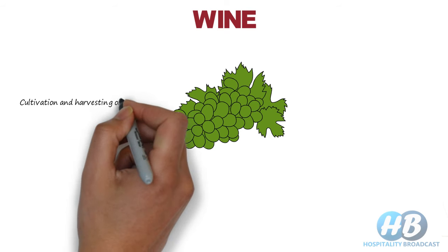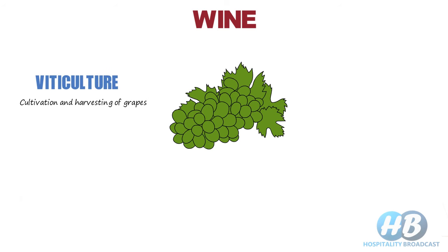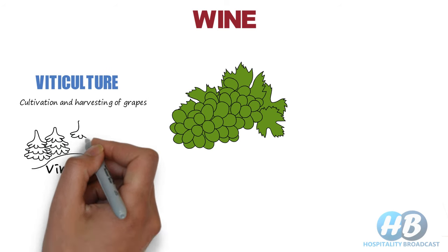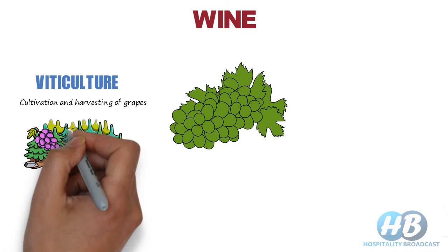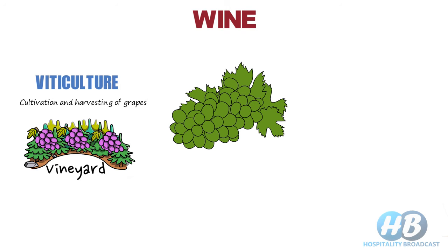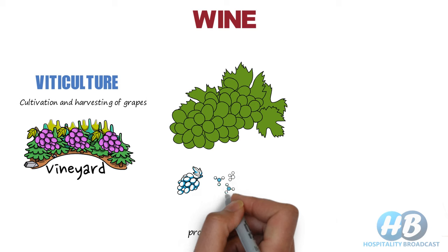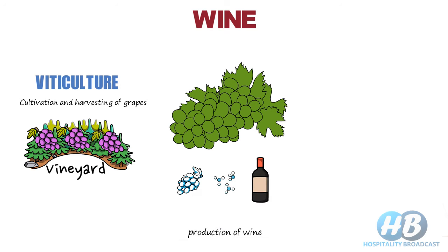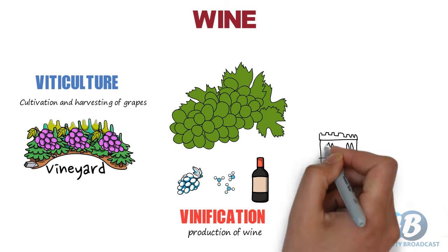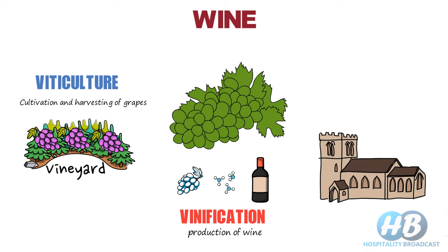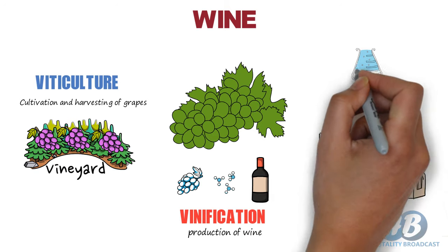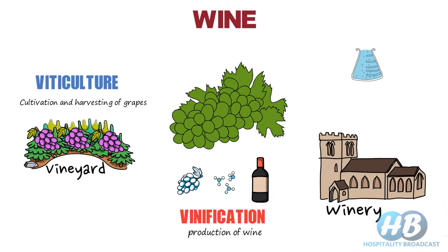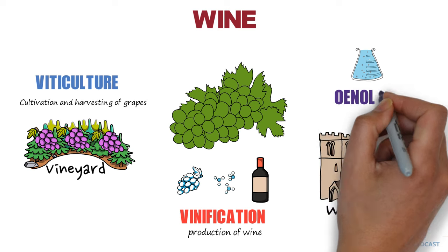Cultivation and harvesting of grapes for wine is known as viticulture, and a vineyard is an area of land where grapes are grown for making wines. The production of wine, starting from grape selection, its fermentation to its bottling, is known as vinification. The place or building where wine is produced is called a winery. The branch of science which deals with wine and the winemaking process is called oenology.